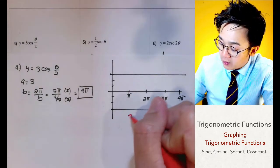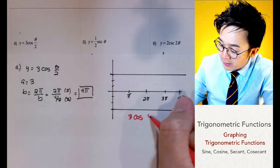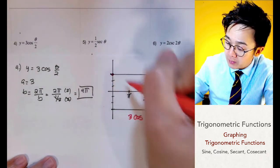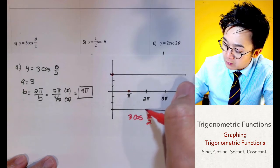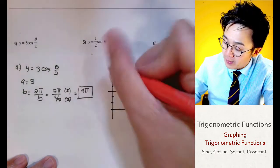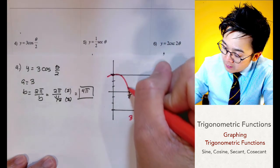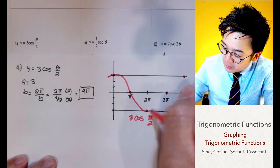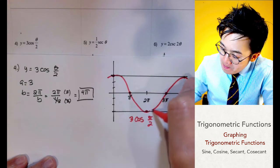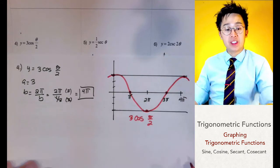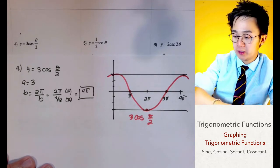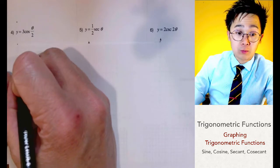For y equals 3 cosine pi over 2, we start at the top, go to the middle, to the bottom, back to the middle, and to the top, constructing a smooth curve. This is the graph of 3 cosine pi over 2.